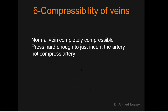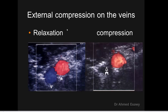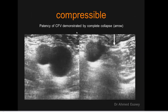Compressibility is the sixth character. A normal vein is completely compressible. Press hard enough to compress the vein but not to indent the artery. With compression ultrasound, when we compress the vein its walls coapt to each other — this is the normal response to external compression, indicating patency and absence of deep venous thrombosis. The common femoral vein, when compressed, shows complete collapse — this is a normal character of veins and an essential sign to exclude DVT. A vein is incompressible in the case of DVT.